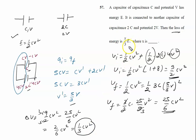But we have to calculate the answer in terms of energy E, and E is given by half CV square. So we multiply and divide by 2. Now, half CV square is given by E. So it is 2 by 3 into E.